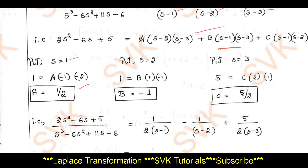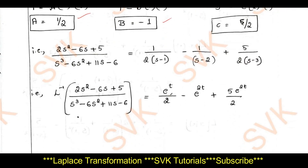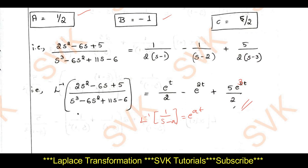Putting s = −2 gives B = −1, and putting s = −3 gives C = 5/2. Substituting A, B, C and taking the inverse Laplace: L⁻¹{1/(s+1)} = e^(−t), L⁻¹{1/(s+2)} = e^(−2t), L⁻¹{1/(s+3)} = e^(−3t). This gives the required solution.